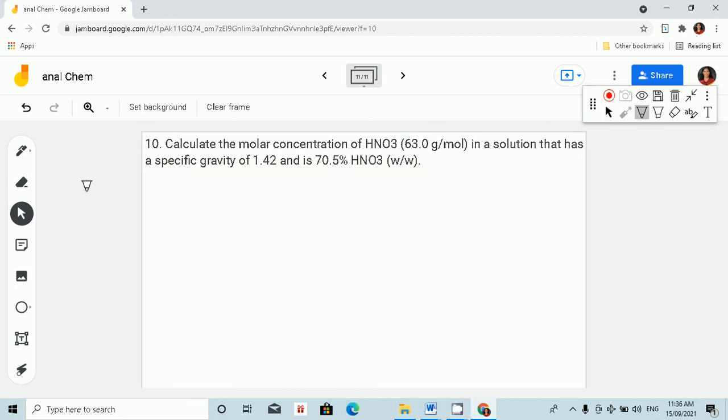We are given specific gravity, or relative density. Density, so we have the density is equal to M over V, mass over volume. So having this formula, we know that the unit of specific gravity is 1.42. So we have the units of kilograms per liter. So that's the unit of specific gravity.